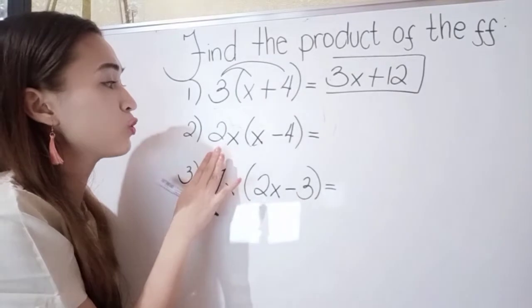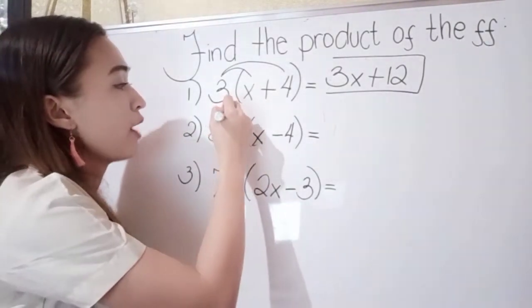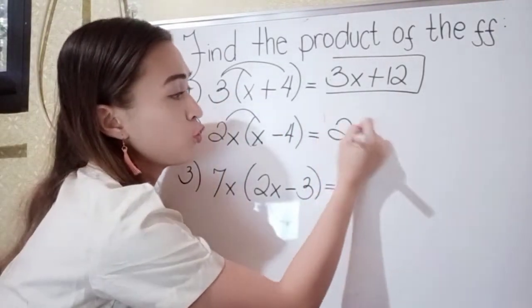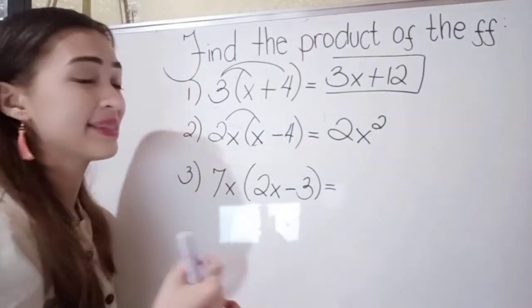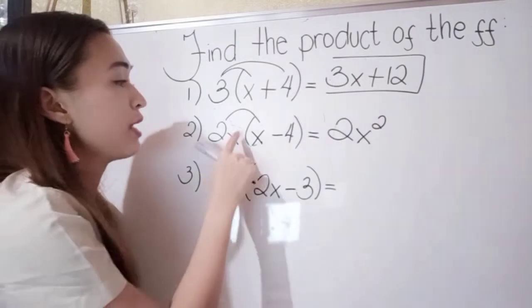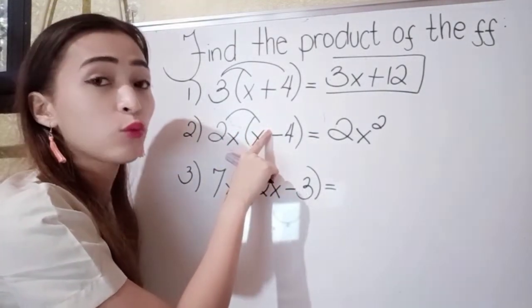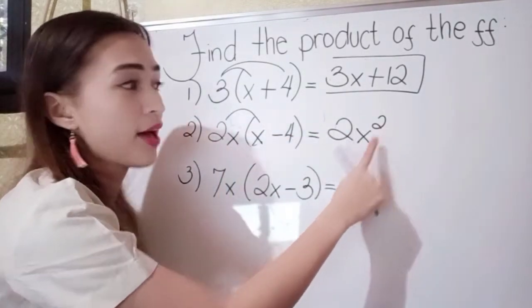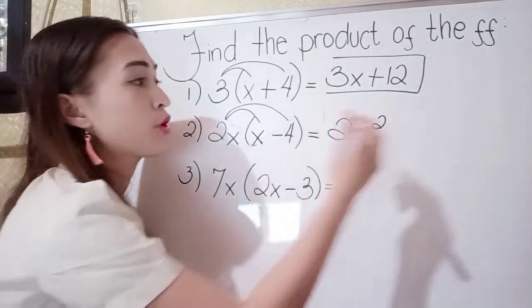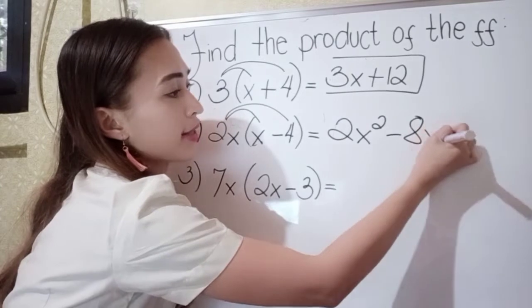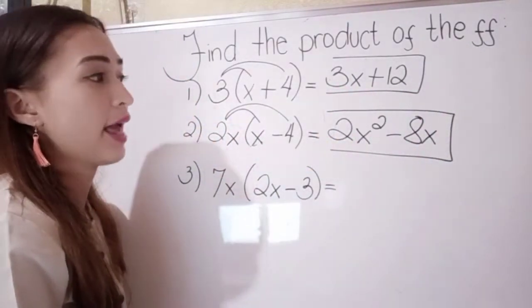For number 2, we're going to use the distributive property. So 2x times x is 2x squared, because we add the exponents — there's an imaginary 1 on each x, so 1 plus 1 is 2, giving us x squared. Next, 2x times negative 4 gives us negative 8x. So our answer is 2x squared minus 8x.